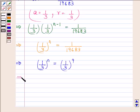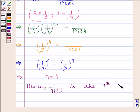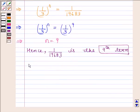we find that n is equal to 9. Hence, 1 by 19683 is the ninth term of the given GP.